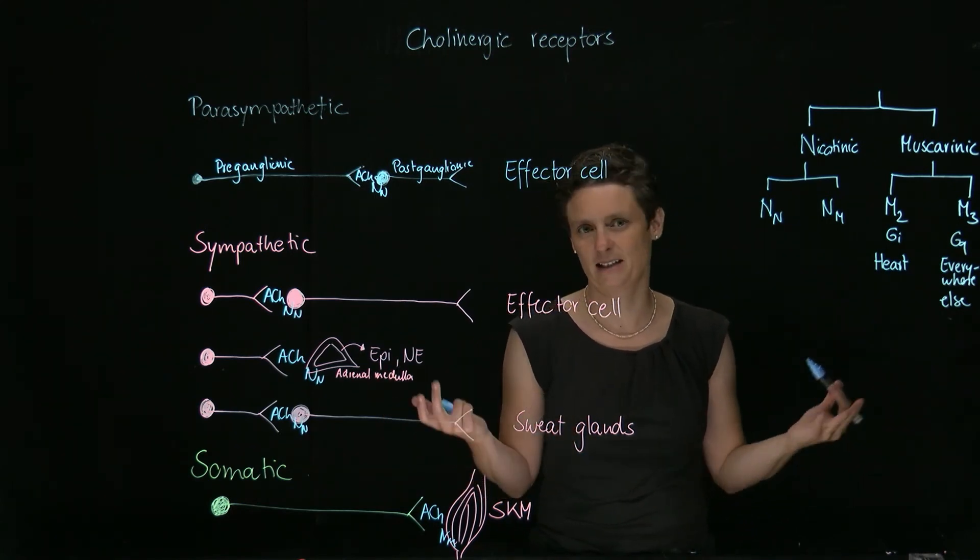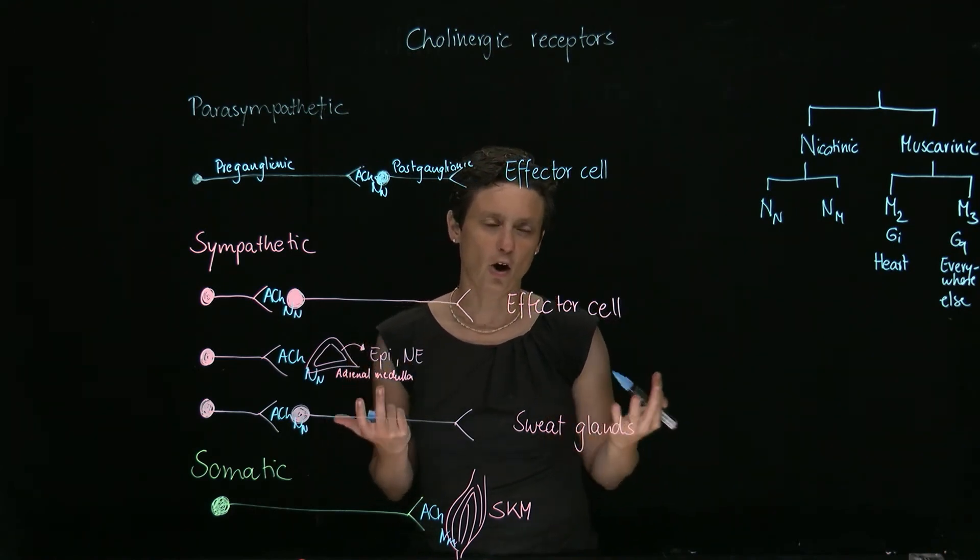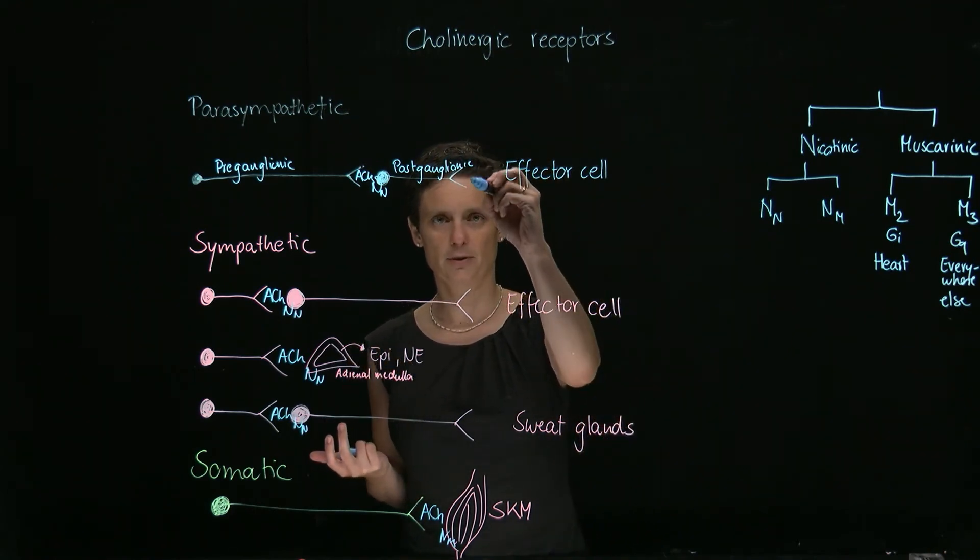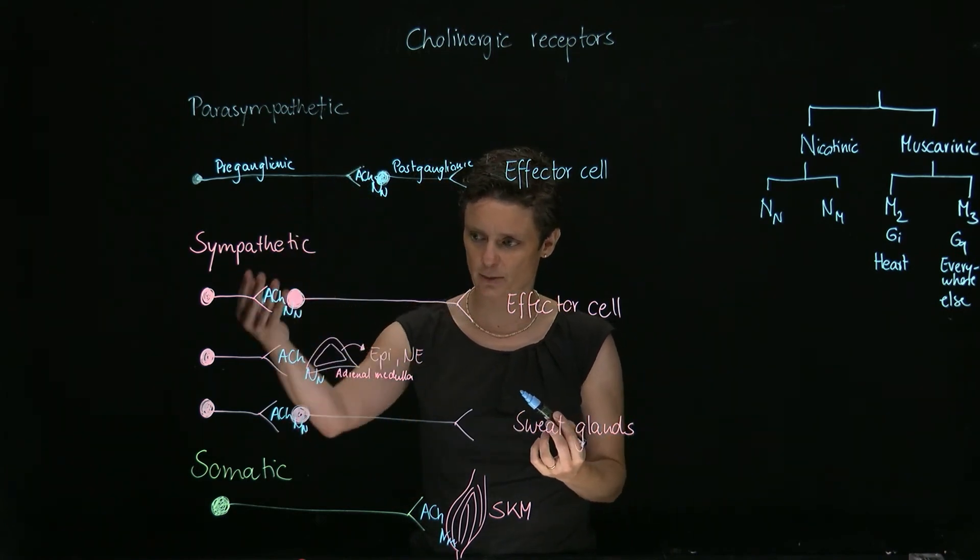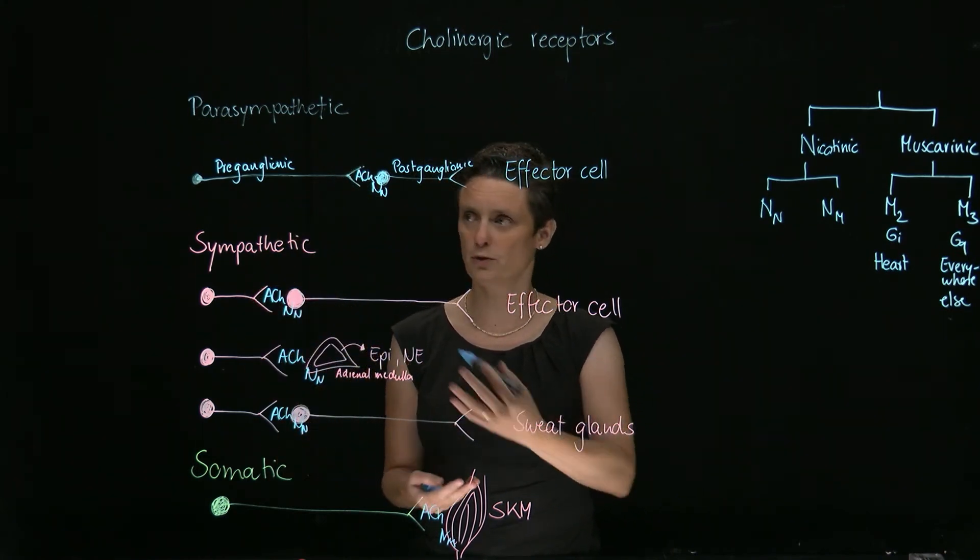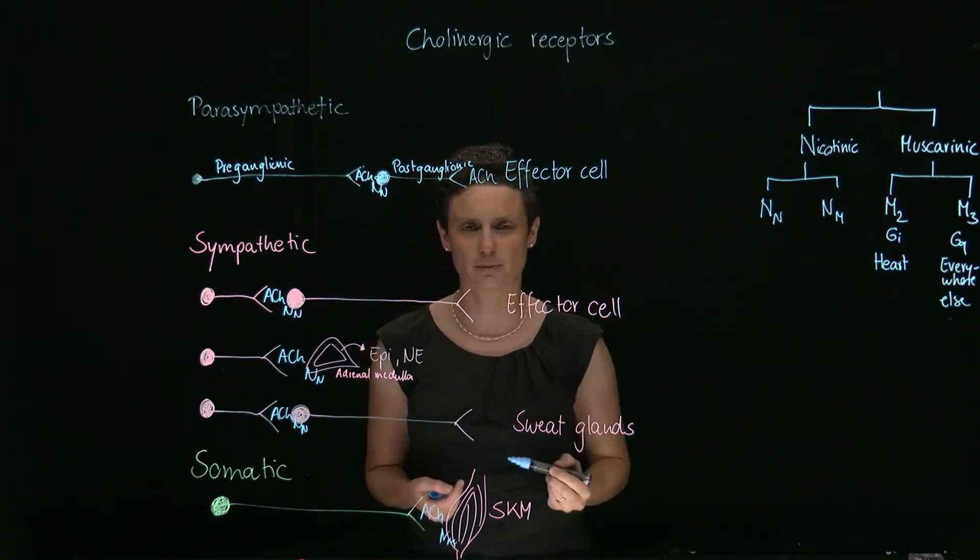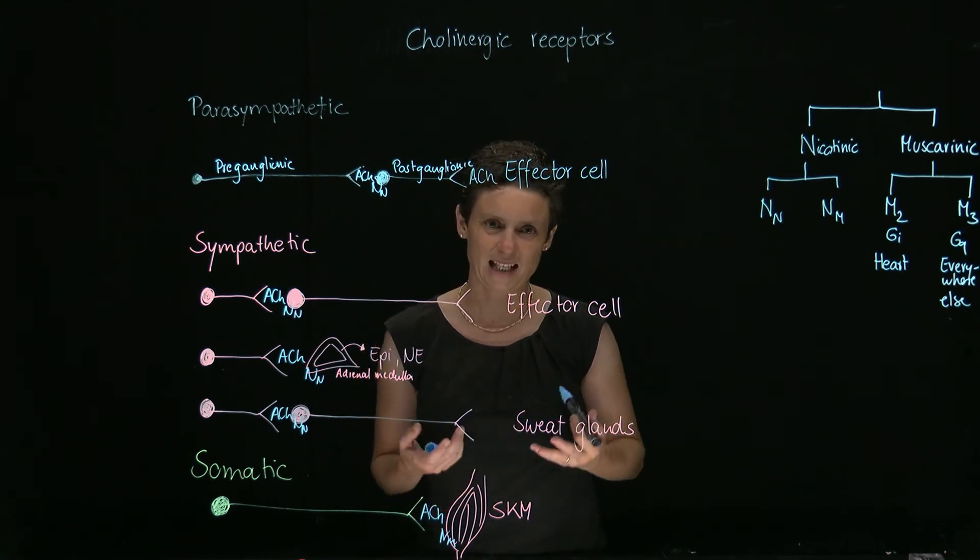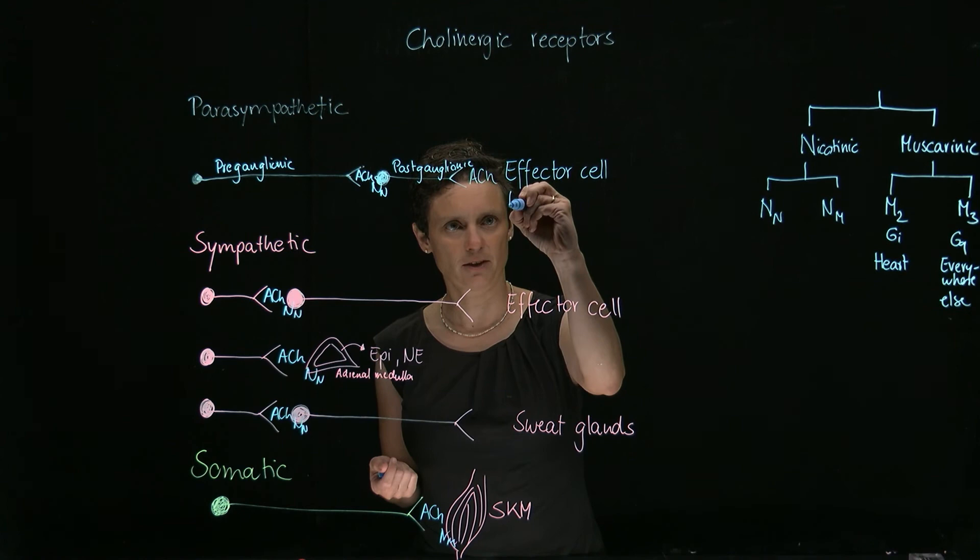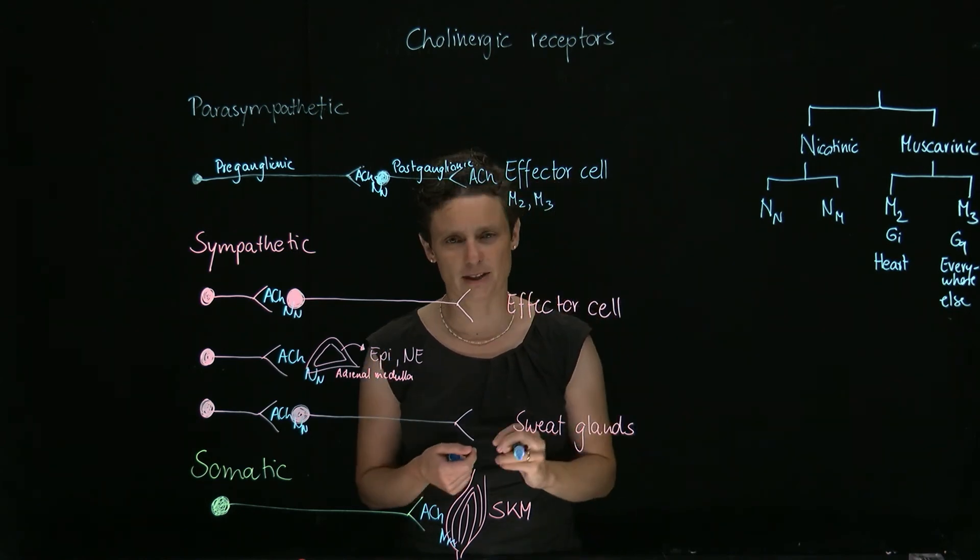We find those on the effector organs of the parasympathetic nervous system. So where is acetylcholine else released? Well, it's released almost on this first neuron, on this preganglionic neuron. But obviously also the parasympathetic nervous system uses acetylcholine as its neurotransmitter. So here are the effector organs where we find M2 on the heart and M3 receptors.